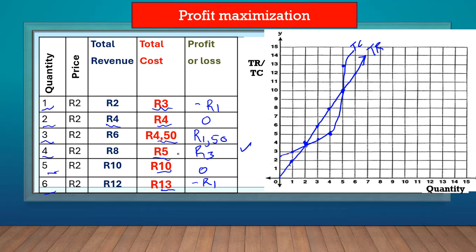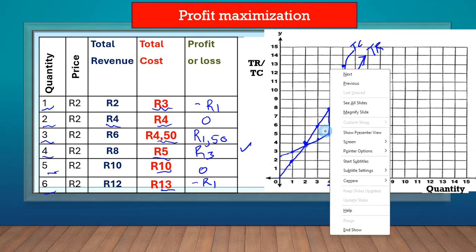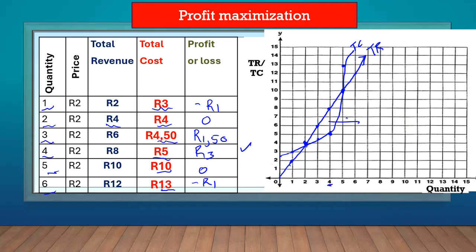We already knew that profits were maximized when the quantity is four. Now we can also see it on the graph. The line at quantity four represents profit maximization because that's where the gap between the total revenue and the total cost is the largest. So when we use graphs, the point where the difference between total revenue and total cost is the largest is our profit maximization point.